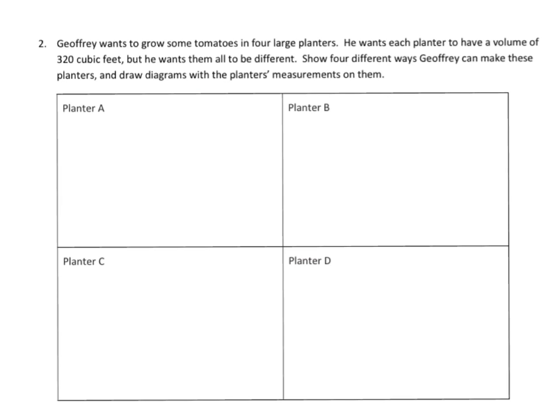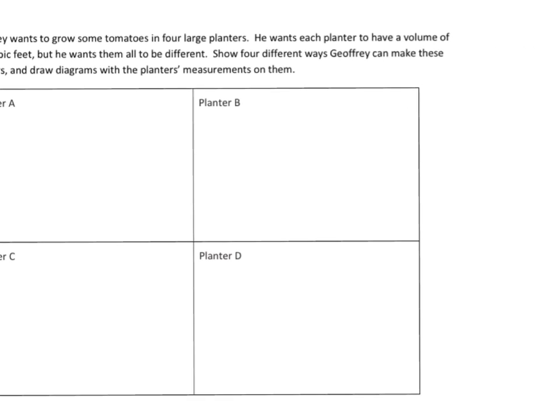Let's look at this one. Jeffrey wants to grow some tomatoes in 4 large planters. He wants each planter to have a volume of 320 cubic feet, but he wants all of them to be different. Show 4 ways that Jeffrey can make these planters and draw diagrams with the measurements. We need to find various ways to make 320 cubic feet. It's easiest to think of pairs of factors — this could be 32 times 10. We need three factors, so we can decompose 32 into 4 times 8. Therefore, 4 times 8 times 10 equals 320.